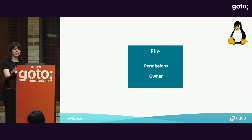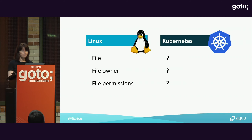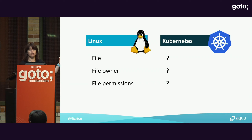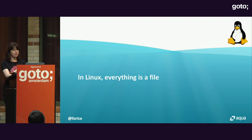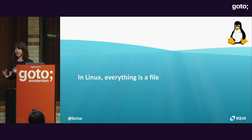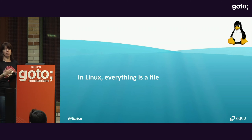But as we'll see in Kubernetes, things are separated out into different abstractions. What I'd like to do is say: if we have a file, a file owner, and file permissions on Linux, what's the corresponding equivalent in Kubernetes? In Linux, everything is a file — it's not quite true because there are also processes, but basically everything in Linux exists as something that looks like a file or has a file descriptor.